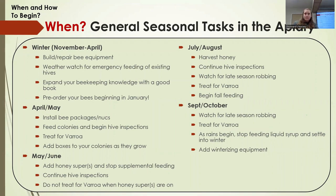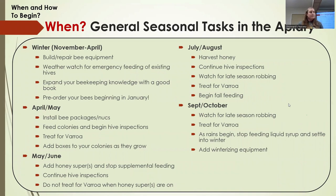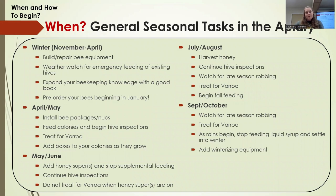In May and June, you'll add your honey super or supers depending on the year. A super — also called a honey box — is one of those terms with lots of different names. Typically you have brood boxes, which are the large boxes at the bottom, and once you're ready for honey collection for yourself, you put a slightly smaller box on top — that's your honey super.